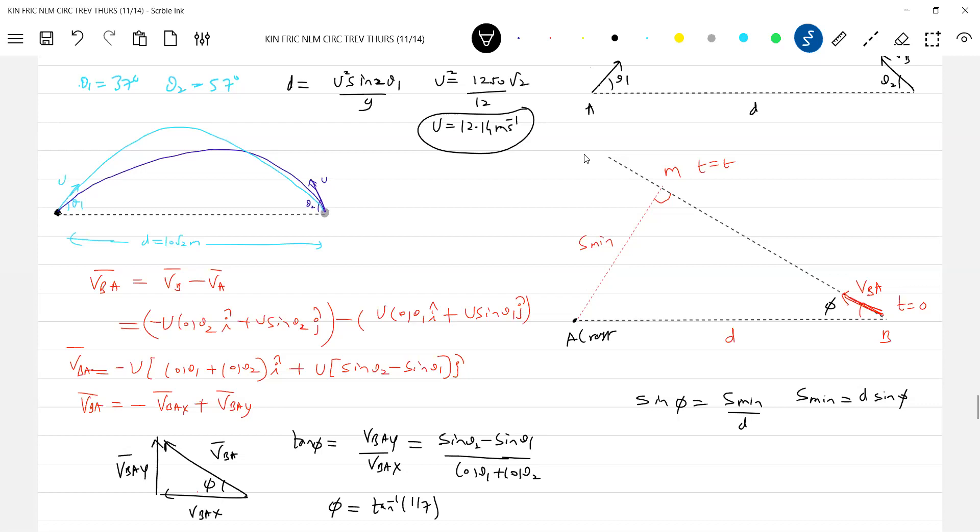For the time taken, what is needed? So we know VBA, the magnitude. So then the distance BM should be equal to VBA into that T. So this is the time taken when the separation between them is minimum.